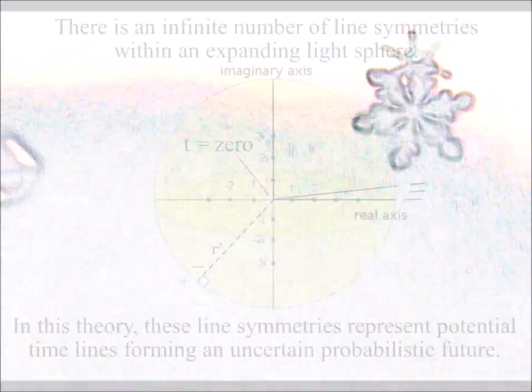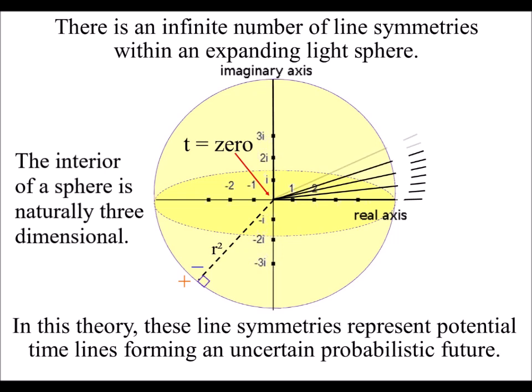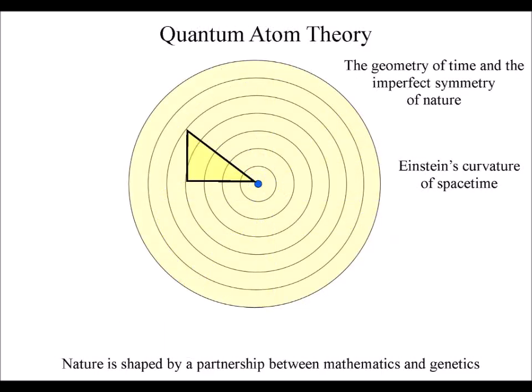The potential for infinite snowflake diversity can be based on the simple fact that there is an infinite number of line symmetries within a sphere, as long as it is continuously expanding or radiating out.